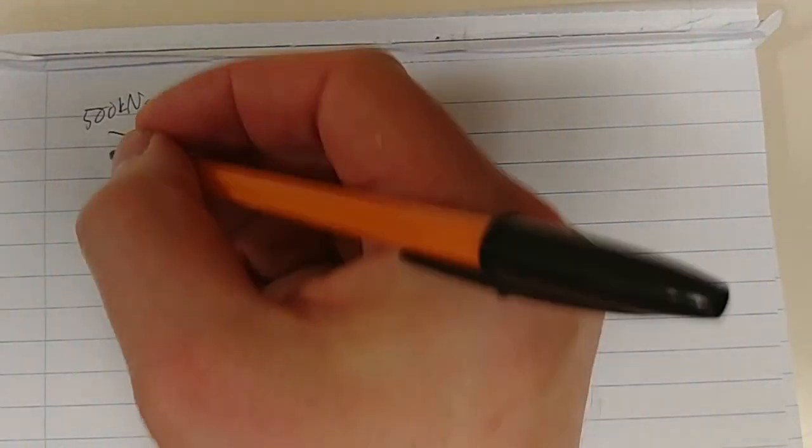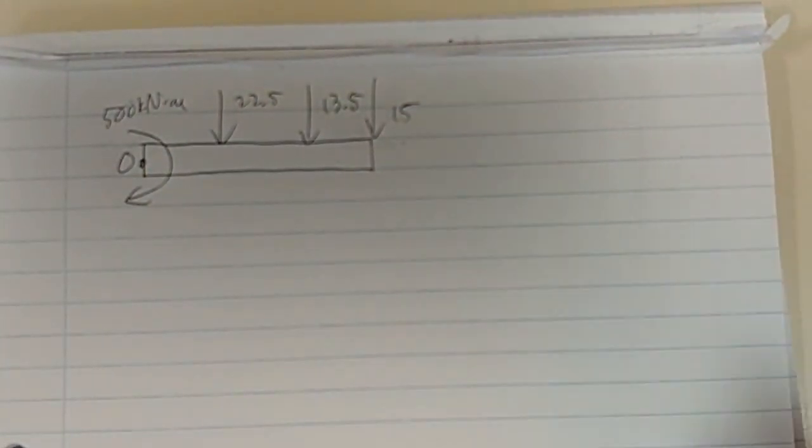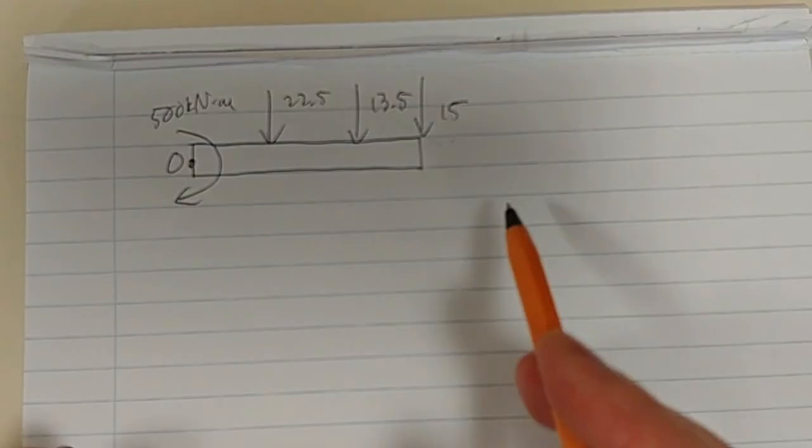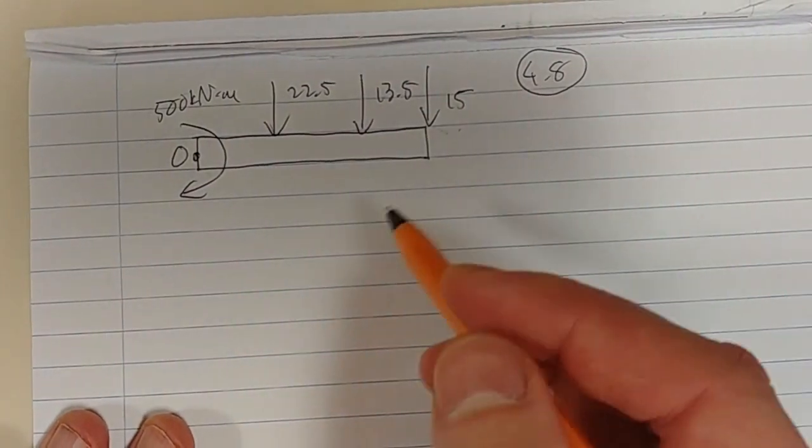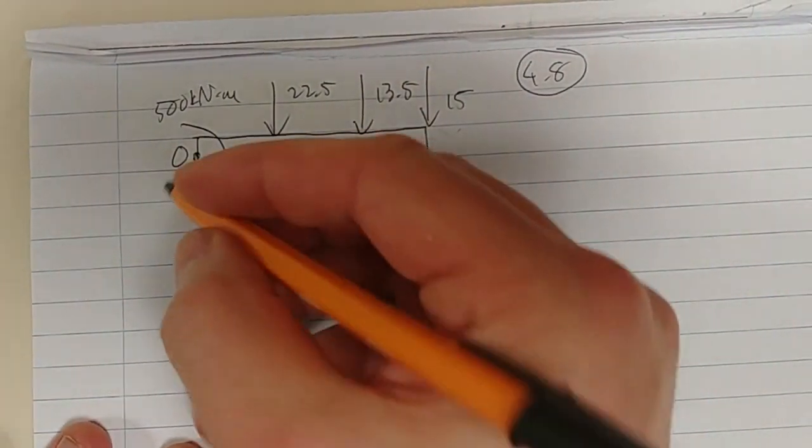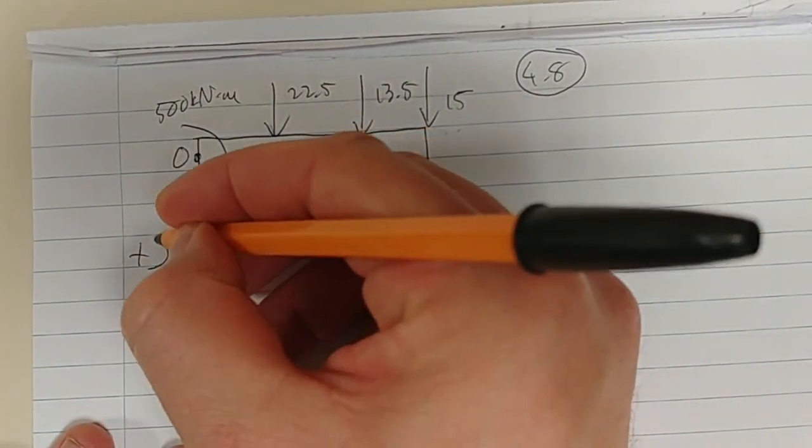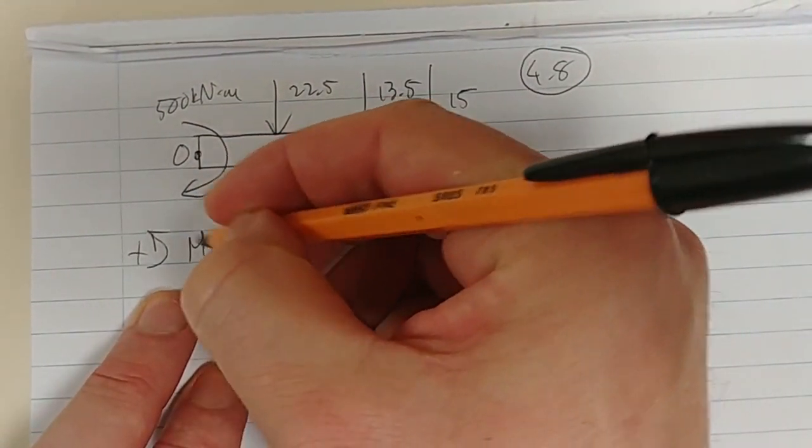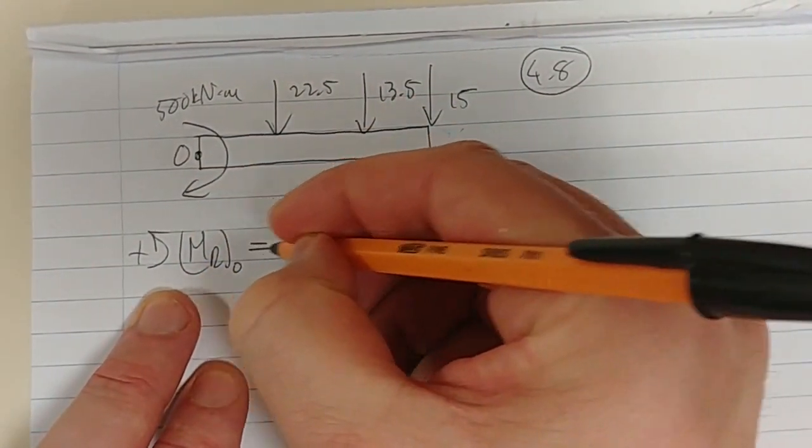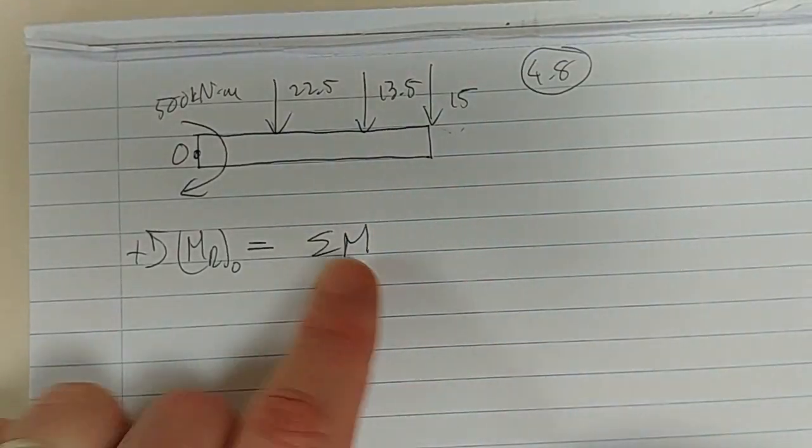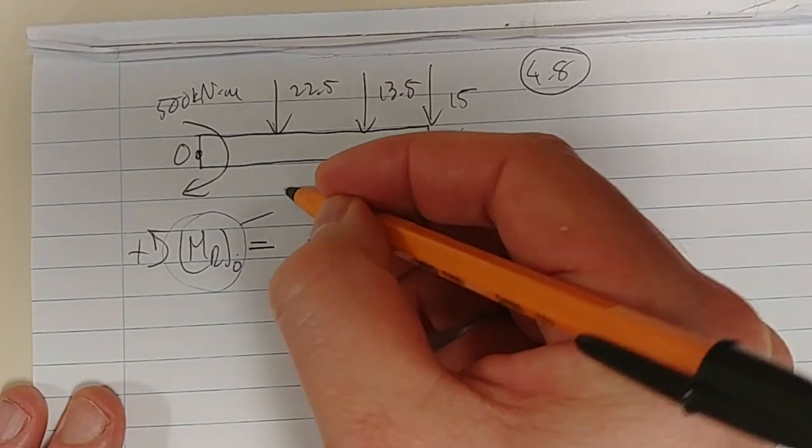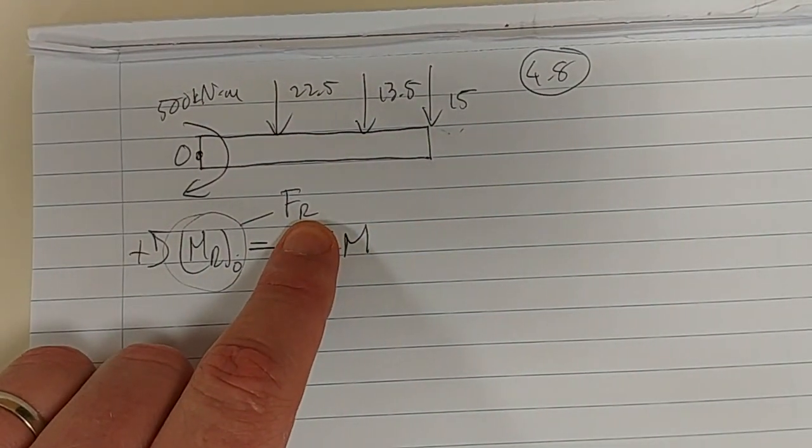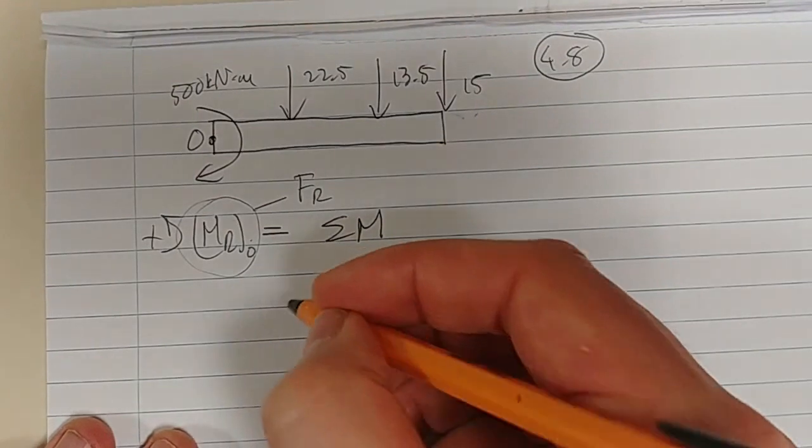We want to get the position of the equivalent force. We still need an equivalent force and position. Let's just redraw that: 500 kilonewton meter, 22.5, 13.5, and 15. Where relative to this point will we find an equivalent force? The way we do this, same as chapter 4.8, is we equate moments. Take anticlockwise as positive. The resultant moment about point O equals the sum of all the moments of the forces. For this we need our total resultant force.